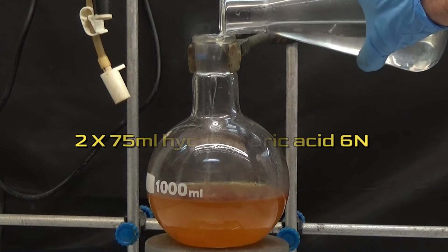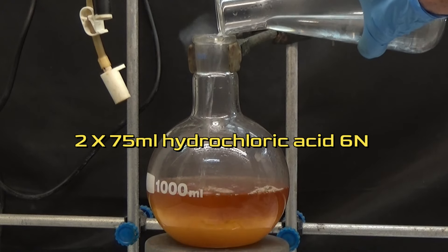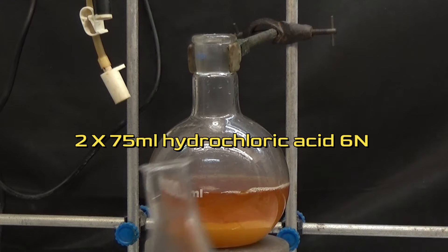To extract aminonitrile from toluene, we will use dilute hydrochloric acid to form amine hydrochloride, which is soluble in water.